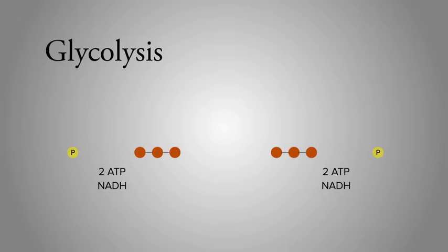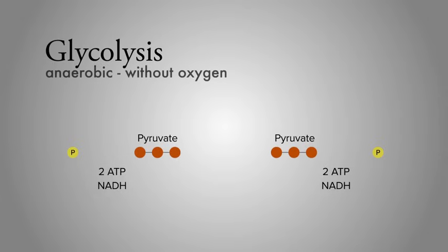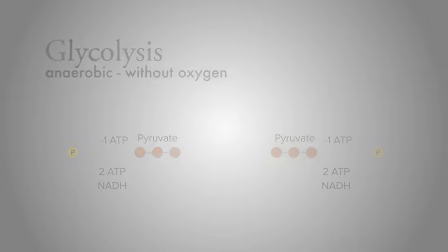The two three-carbon molecules at the end of glycolysis are known as pyruvate. Glycolysis, which is the first step of cellular respiration, doesn't require any oxygen, which means it's anaerobic, meaning without oxygen. So what do we wind up with at the end of glycolysis? Glycolysis produces a net increase of two ATP and stores two electrons in two NADH molecules.